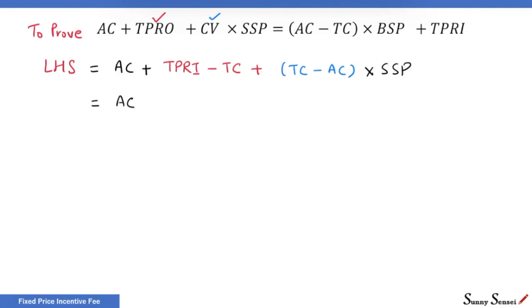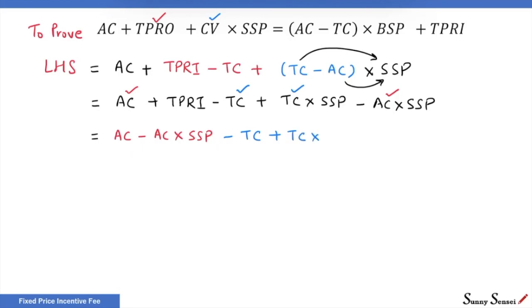Actual cost plus target price minus target cost plus target cost multiplied by seller's share of risk in percent minus actual cost multiplied by seller's share of risk in percent. We have multiple terms with actual cost. Let's put them together. We also have multiple terms with target cost.